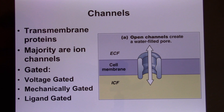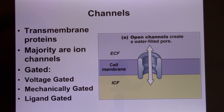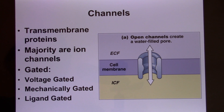Mechanically-gated ion channels are opened by mechanical force. A great example is in your inner ear, where hair cells respond to sound. Sound vibrates the eardrum, which vibrates the ossicles — the smallest bones in your body, each smaller than 0.5 cm, located in the middle ear. They transmit movement into the inner ear, where hair cells vibrate. The hairs have mechanically-gated ion channels that open in one direction and close in the other.